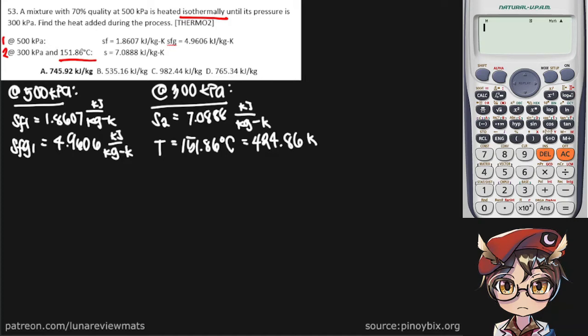And we are being asked to find the heat added, let's call that Q sub a in kilojoules per kilogram. Now in an isothermal process you can get the heat added by multiplying the constant temperature by the change in entropy.